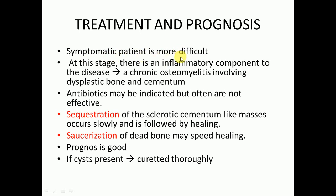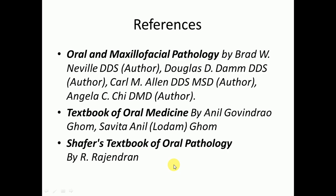For symptomatic patients, the case is more difficult to manage. There is an inflammatory component and it may lead to chronic osteomyelitis involving dysplastic bone and cementum. Antibiotics may be indicated but often are not effective. Sequestration of the sclerotic cementum-like masses occurs slowly and is followed by healing. If cysts are present, curettage is performed as well. The prognosis of cemento-osseous dysplasia is good.